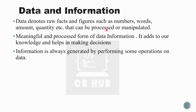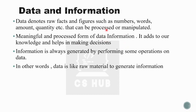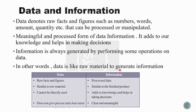Information is always generated by performing some operations on data — that is called data processing. Through data processing we can get information. In other words, data is like raw material to generate a given information. Data is raw facts and figures; information is meaningful data.